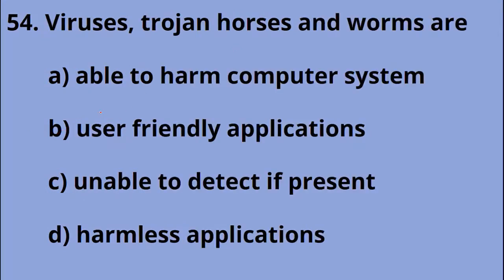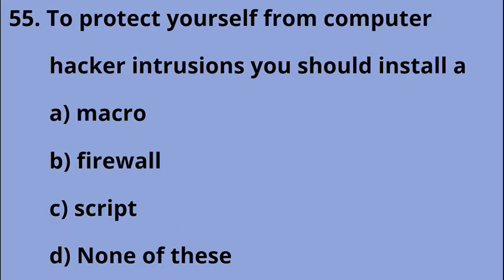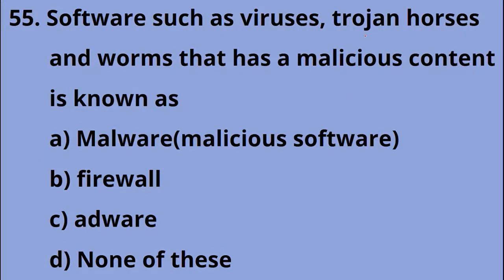Viruses, Trojan horses, and worms are Option A, able to harm a computer system. To protect yourself from computer hacker interventions, you should install Option B, a firewall. Software such as viruses, Trojan horses, and worms that has malicious content is known as Option A, malware — that is, malicious software.